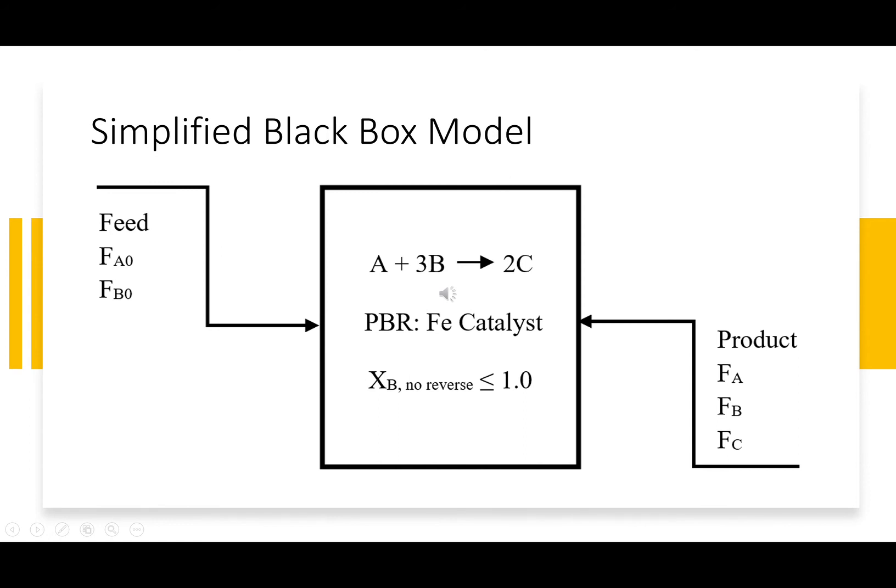As a standard starting place for most chemical engineering problems, we designed a simplified black box model to represent our process, which is here shown as A plus 3B going to 2C, a PBR with the iron catalyst. I wanted to emphasize that we are considering this without the reverse reaction. Although ammonia synthesis is a reversible reaction for our process, we even calculated in MATLAB to prove that the backwards reaction was negligible. So by only considering the forward reaction, that makes the conversion maximum equal to greater than or less than or equal to 1, and our results show that on the next slide.